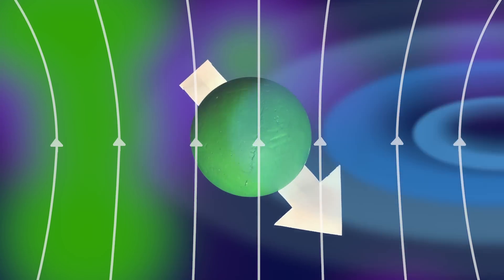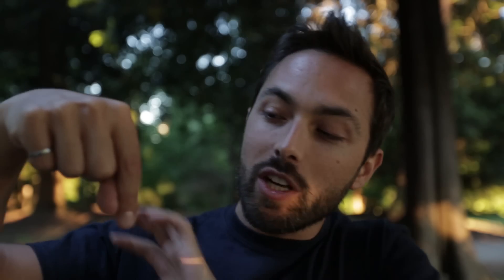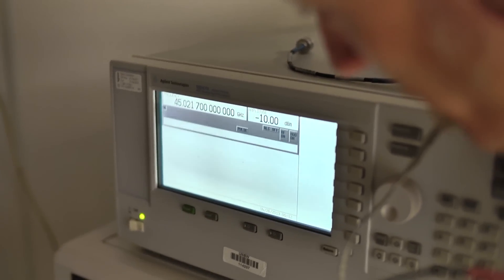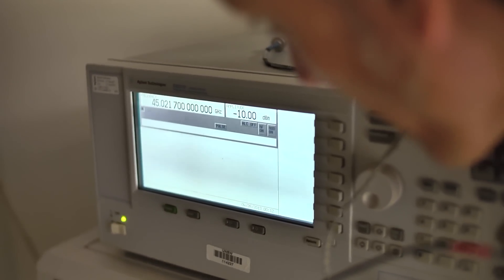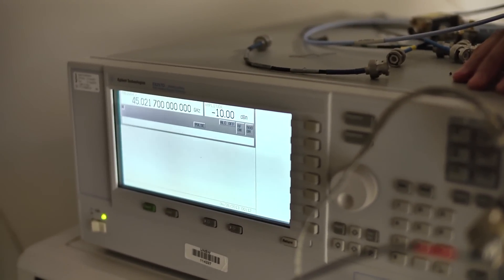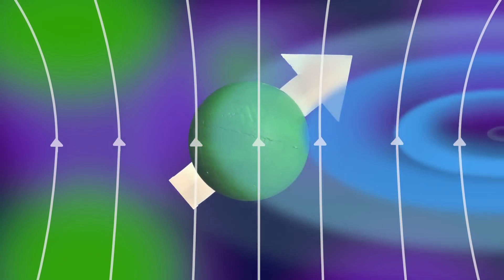If you want to write information onto the qubit, you can put the electron into the spin-up state by hitting it with a pulse of microwaves. But that pulse needs to be a very specific frequency, and that frequency depends on the magnetic field the electron is sitting in. What you see here is the frequency being produced by this microwave source — 45.021 gigahertz — which in the magnetic field we are applying is the resonance frequency of the electron. The electron is a little like a radio that can only tune into one station, and when that station is broadcasting, the electron gets excited and turns to the spin-up state.